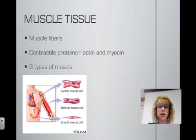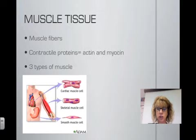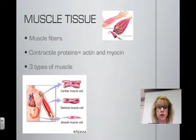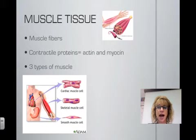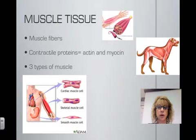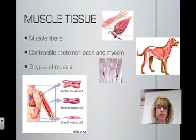The fourth and final type of tissue in the body is muscle tissue. Muscle tissue is composed of cells called muscle fibers. Muscle fibers contract when stimulated, usually by a nerve impulse. The cytoplasm of the fibers contains contractile proteins — actin and myosin. Muscle is the most abundant tissue in most animals, and muscle contractions account for a lot of energy used.